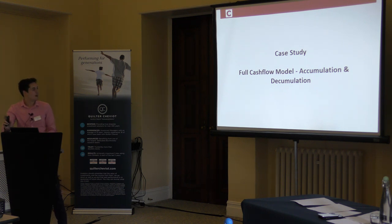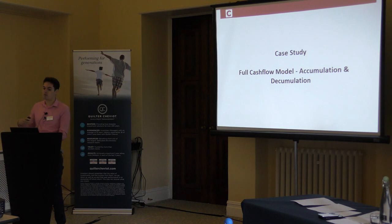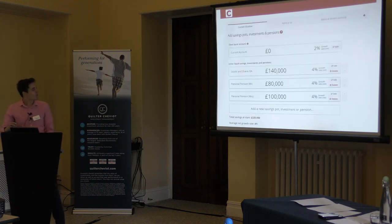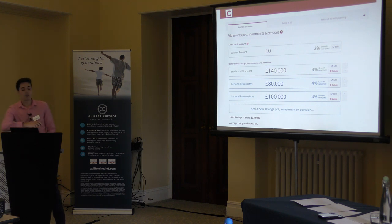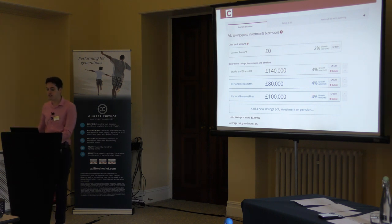That pretty much wraps up our first case study. Now I want to look at the other end of the spectrum — a full cash flow model with accumulation and decumulation, a little bit more complicated with a couple of different factors. This is a joint client — Mr and Mrs Jones, from Wales. They've got a stocks and shares ISA with £140,000 in it, and a personal pension each of £80,000 and £100,000 respectively, with realistic growth rates for their attitude to risk.